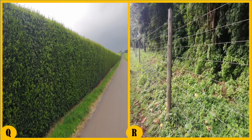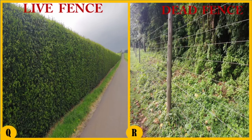What are life fences? Life fences are fences that are made of growing plants. The plants are trained to grow in the desired size and shape. Dead fences, on the other hand, are fences that are made of non-living materials — for example, wires, posts, stones, etc. Q is a life fence, while R is a dead fence.